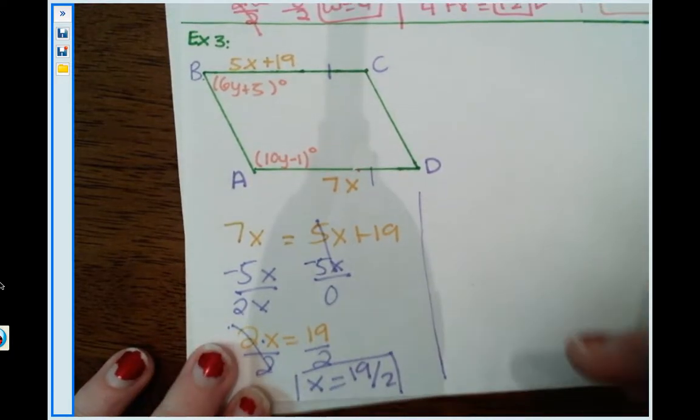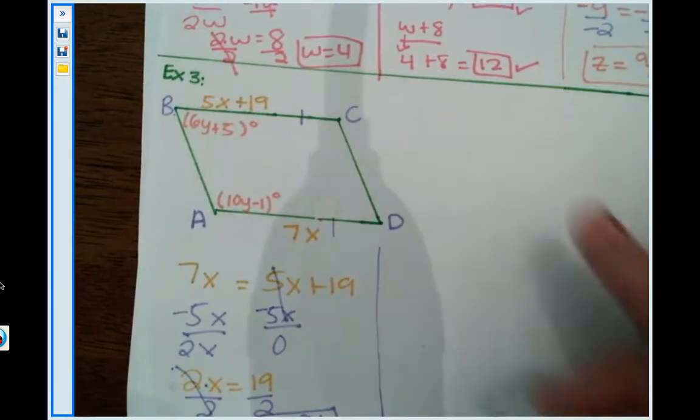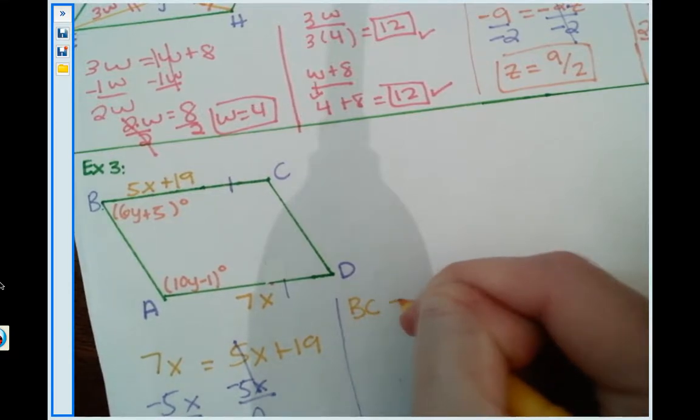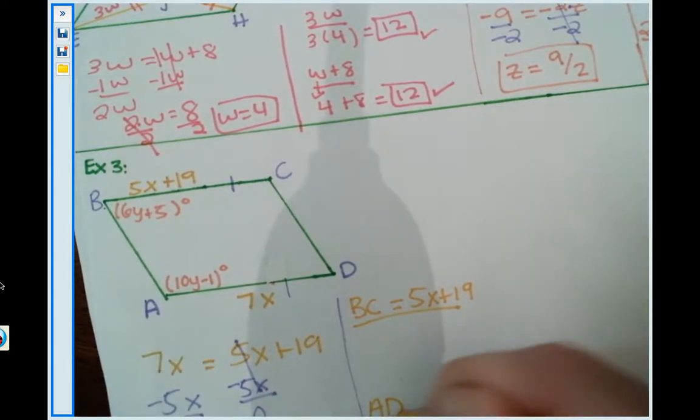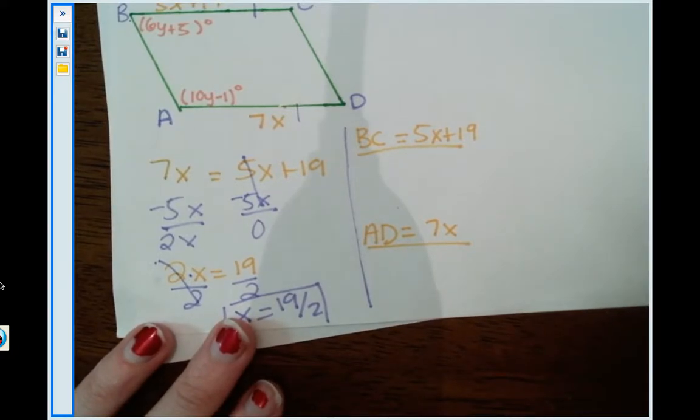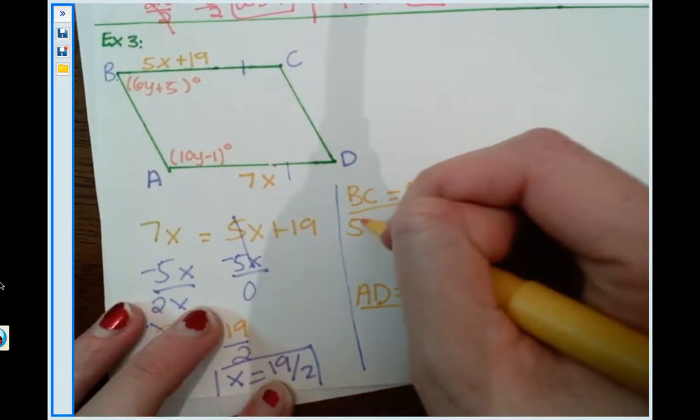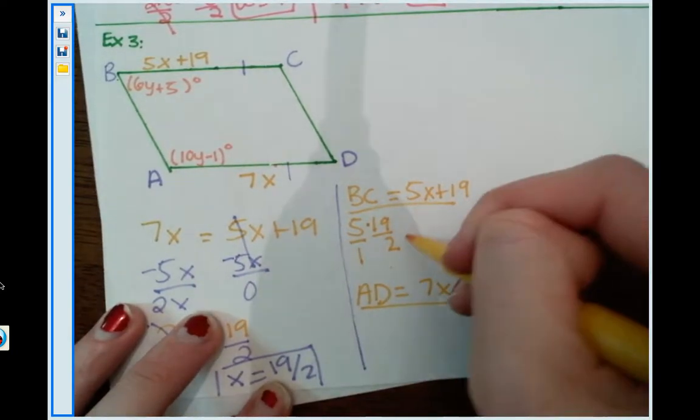But now, we have to find the variables and the sides and angles containing the variables. So I need to solve for side BC and AD. So BC equals 5x plus 19. And AD equals 7x. So let's start solving. So everywhere I spot an x, I'm going to substitute in 19 halves, which fractions are a friend. So we have 5 times x, which is 19 halves, which I'm going to put the 5 over 1, since we have fractions, plus 19.